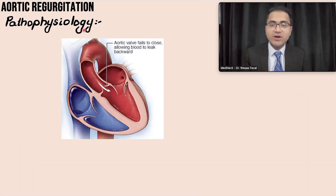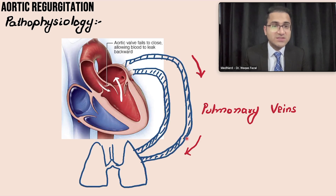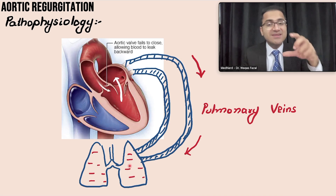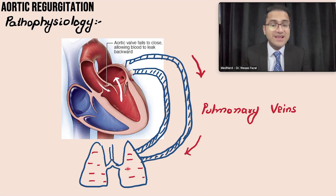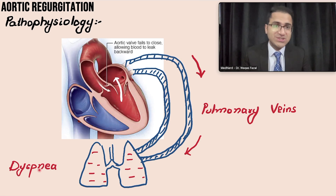When the left ventricle pumps blood to the aorta and aortic regurgitation is present, blood gushes back toward the left ventricle. This causes a buildup of pressure in the left ventricle, which is transmitted backwards to the left atrium and then to the pulmonary veins. The pulmonary veins can no longer deliver blood to the left atrium, so blood backs up in the lungs. Accumulation of blood and fluid in the lungs results in dyspnea — shortness of breath — a common presentation of aortic regurgitation.